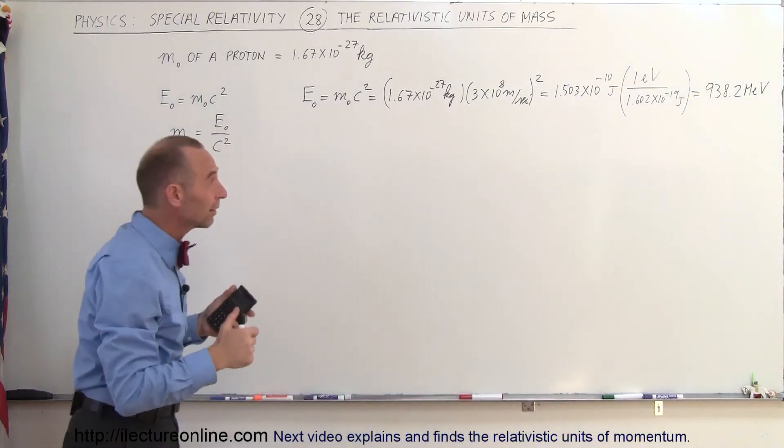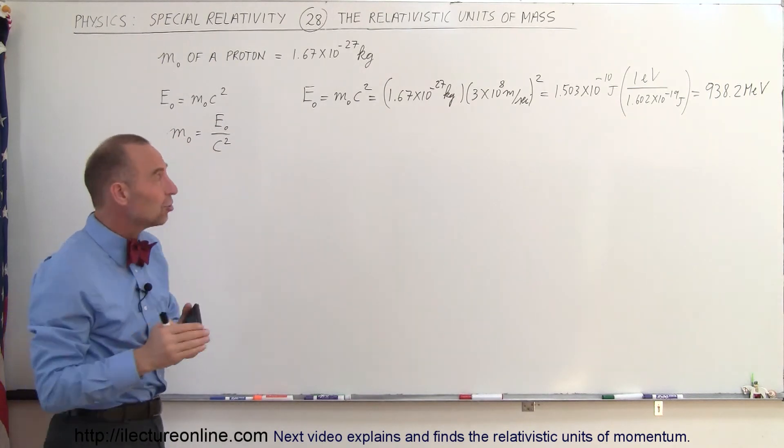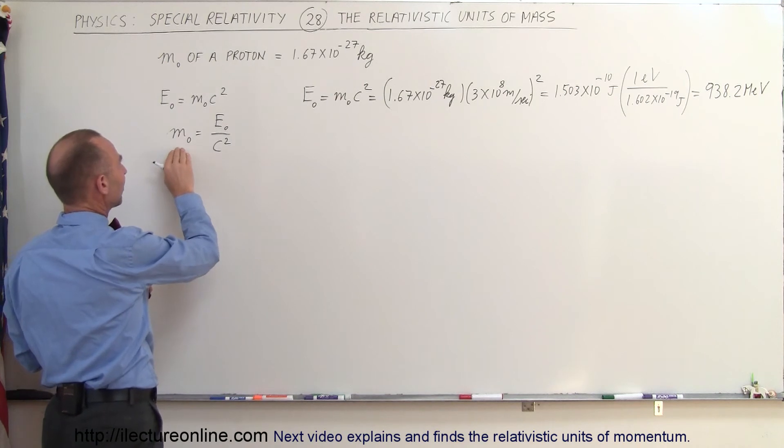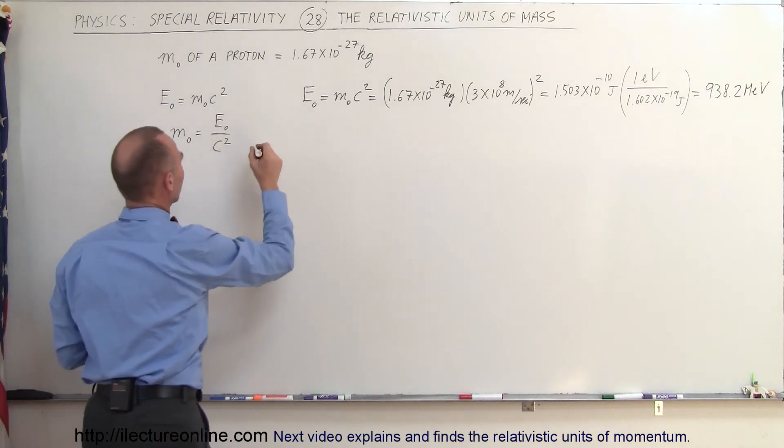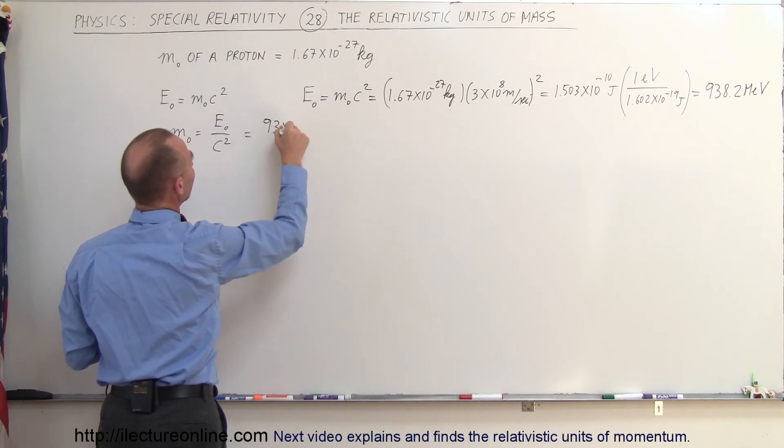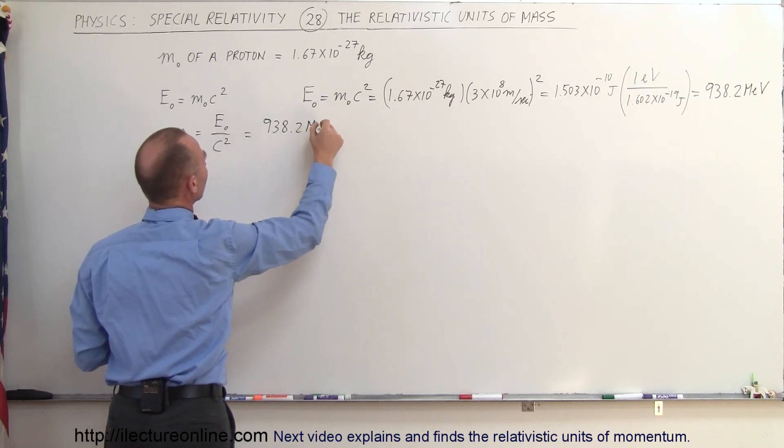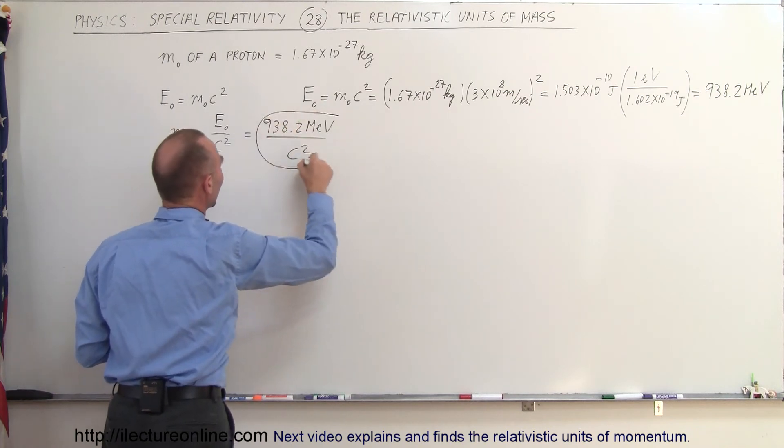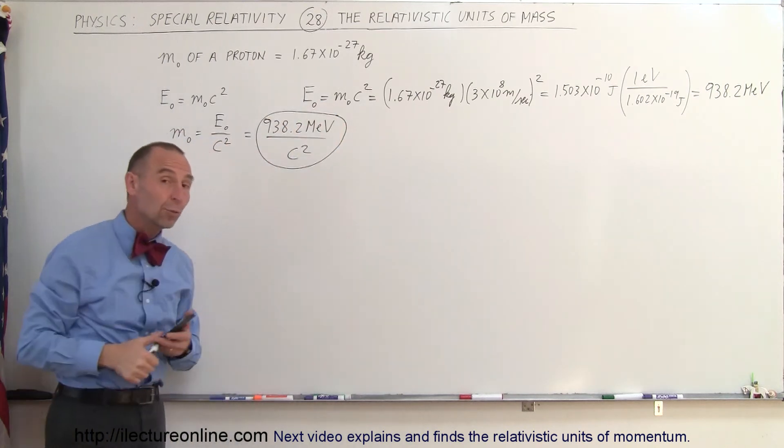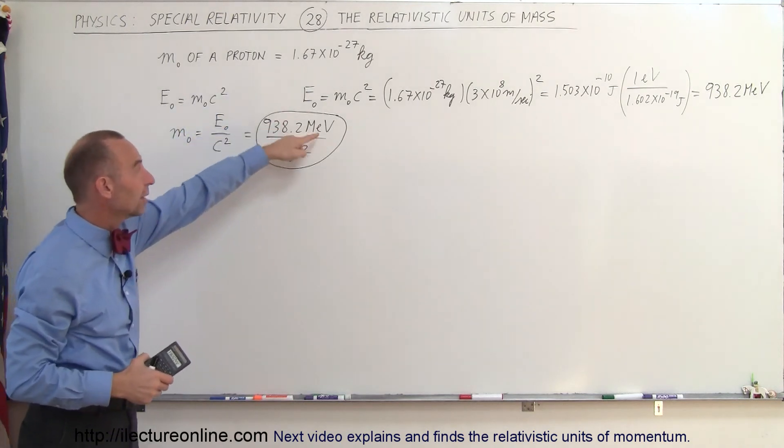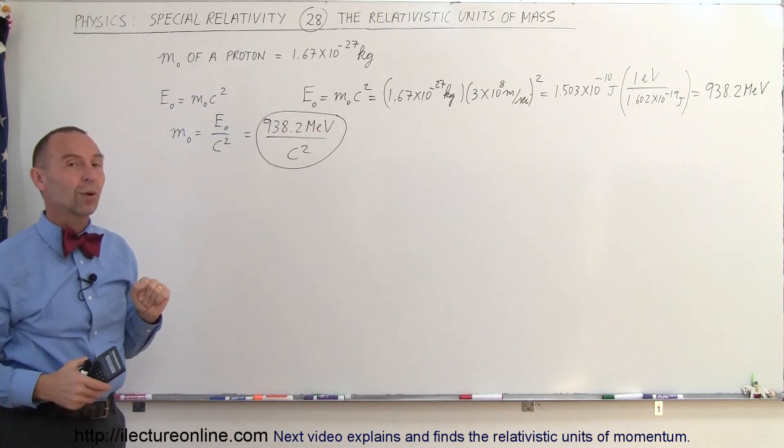So 938.2 million electron volts is the rest mass energy of a proton. So how do we express the rest mass in relativistic terms? This is equal to 938.2 million electron volts divided by C squared. And this is really the way they like to express mass in relativistic terms. So they write it as the energy in million electron volts divided by C squared.